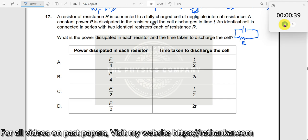Constant power P is dissipated in the resistor and the cell discharges in time t, which means what? You connect the cell to this one and you wait for time t, and after time t you see the entire energy in this cell gets converted into heat energy in the resistor.